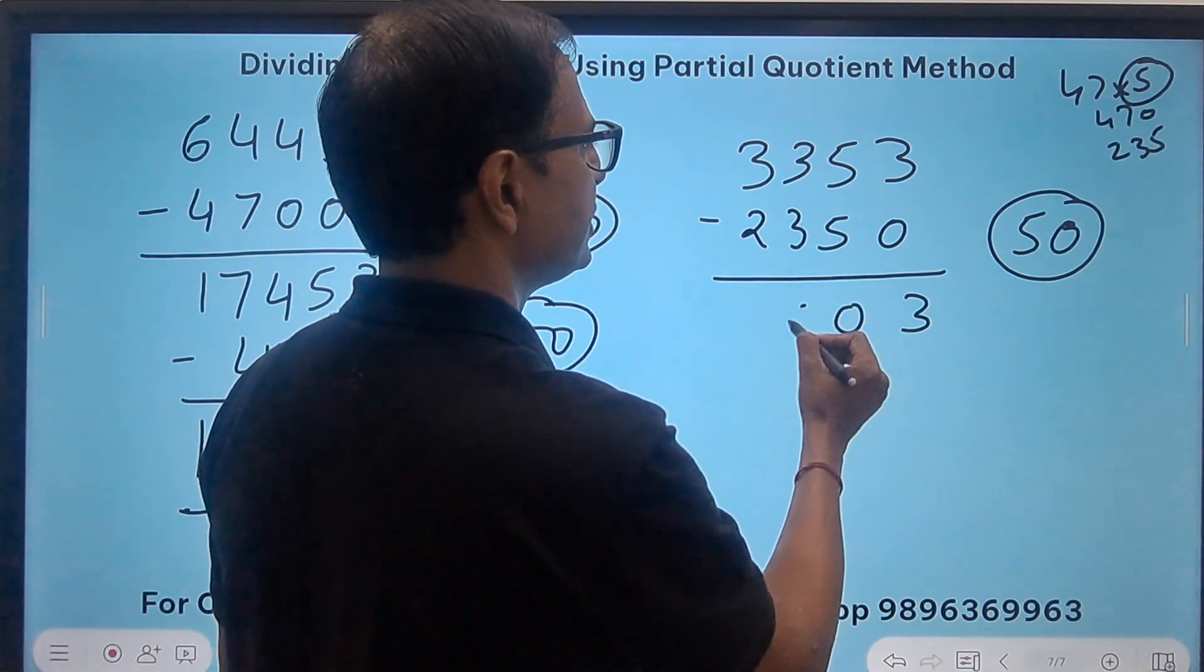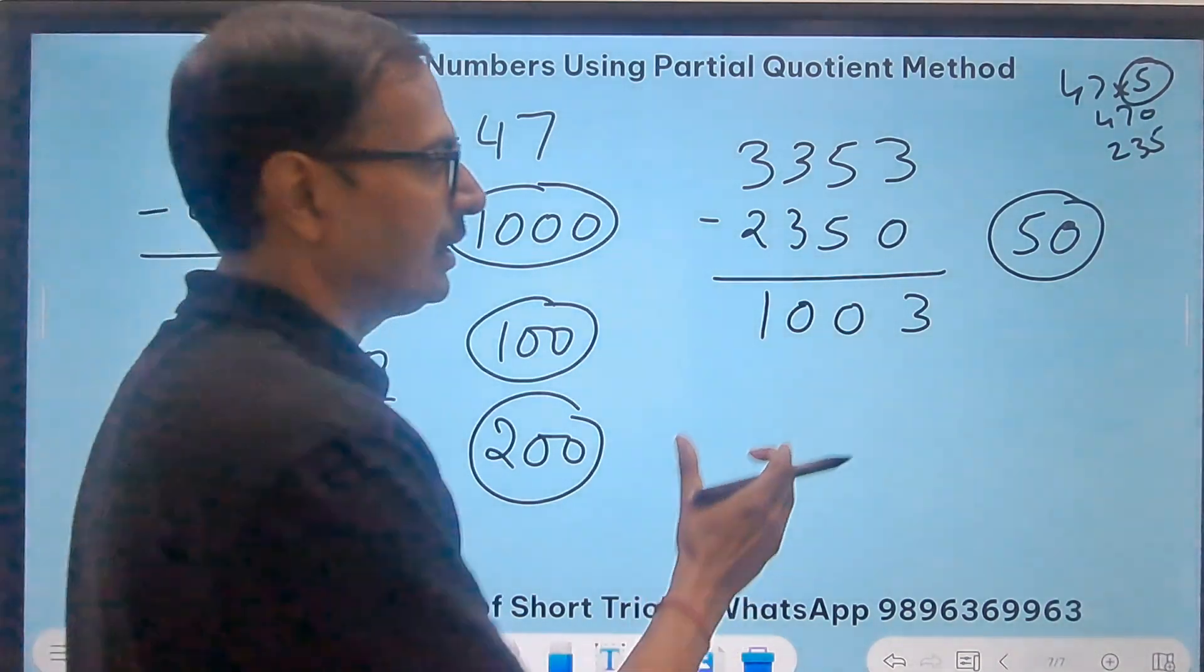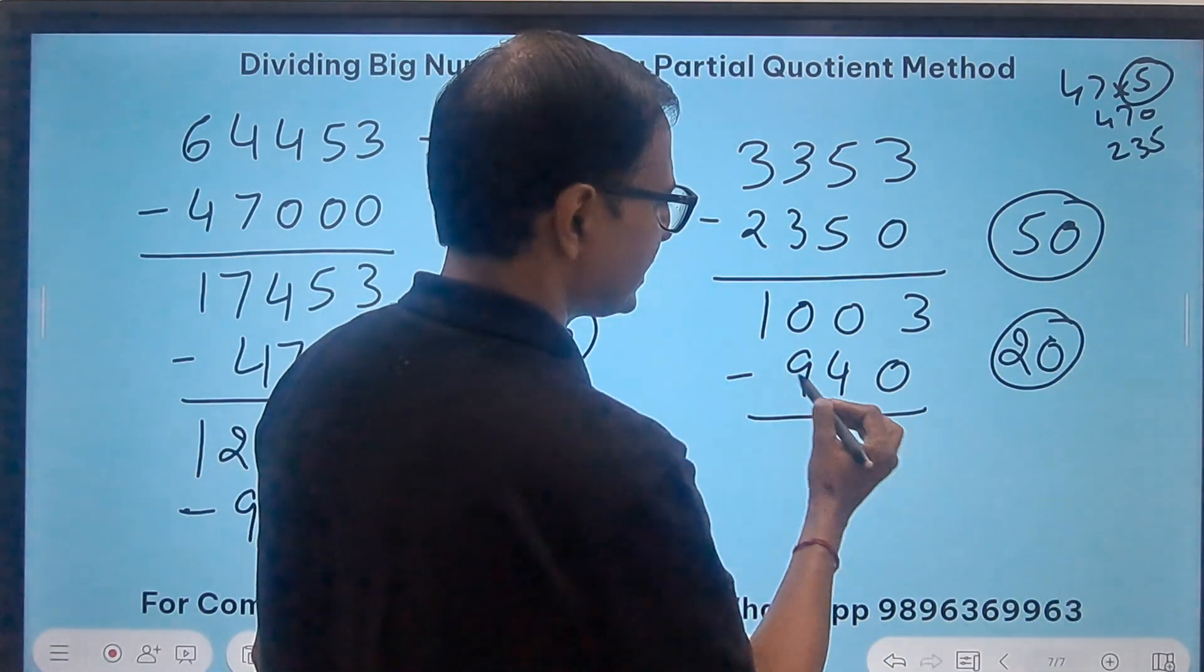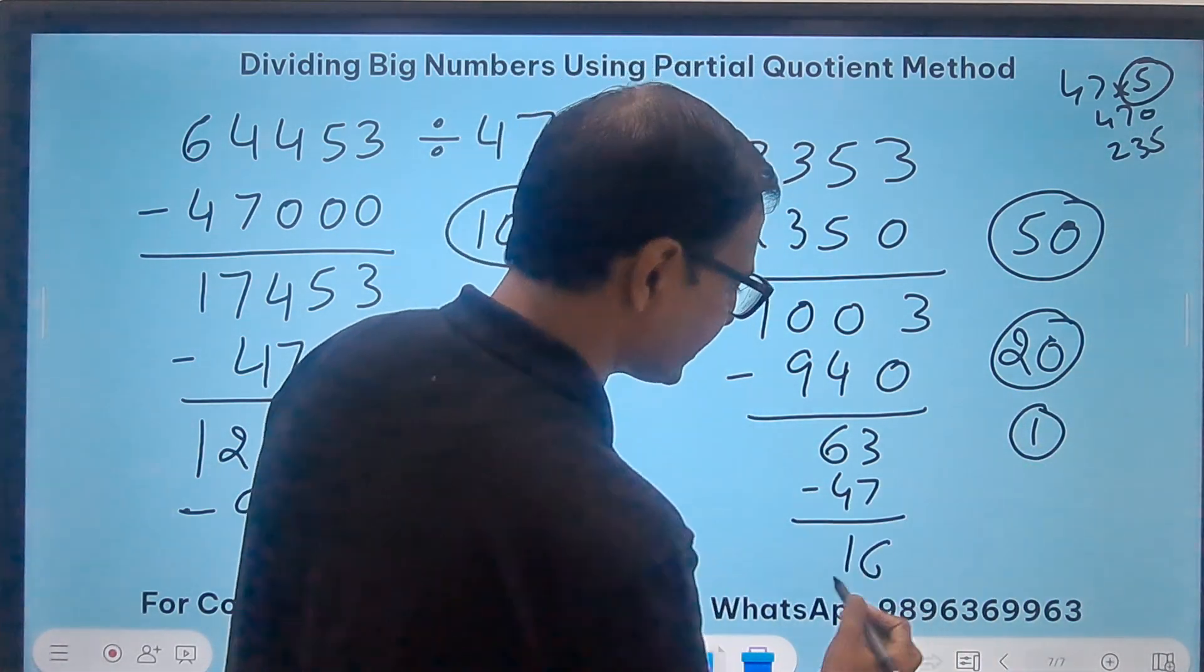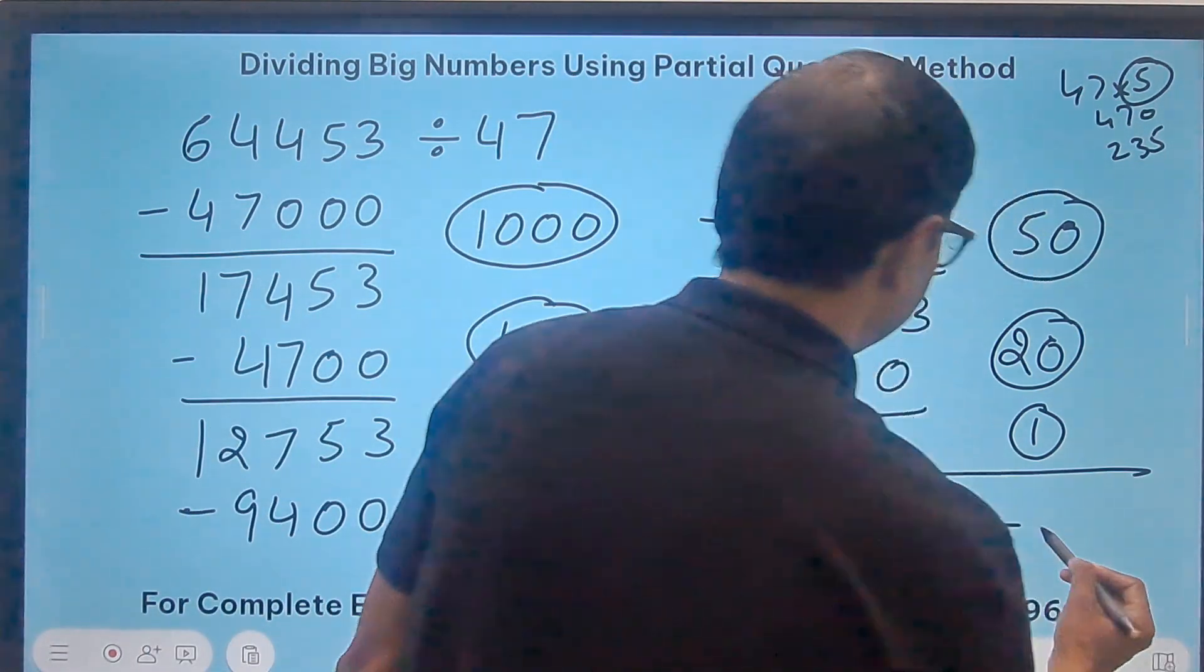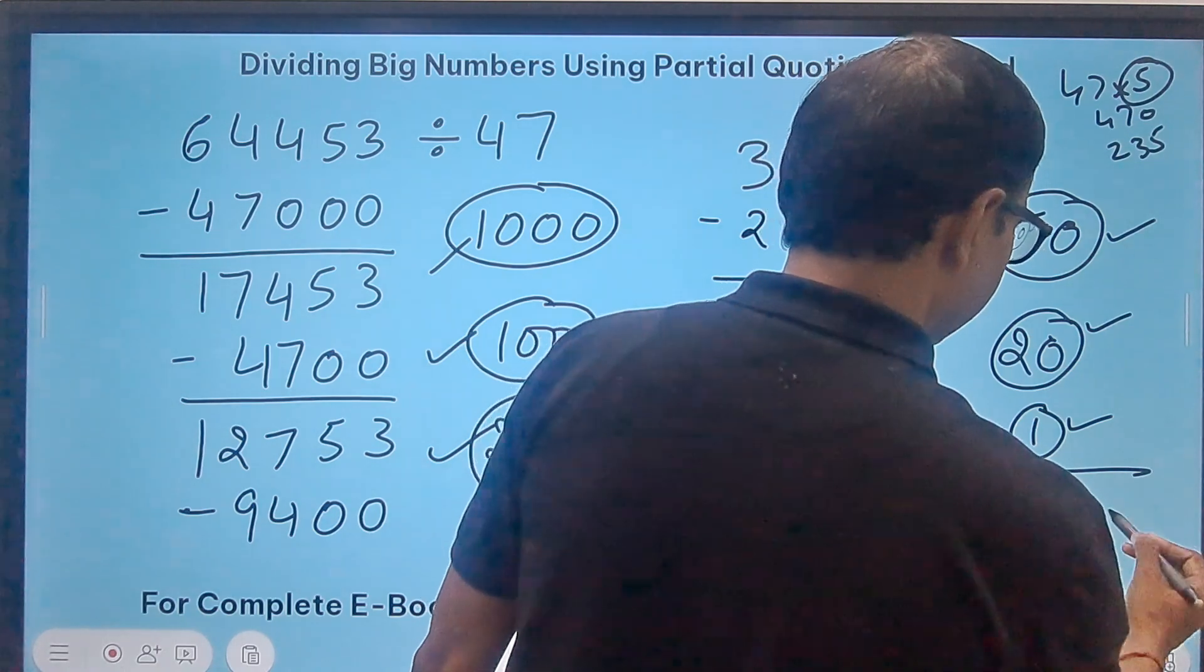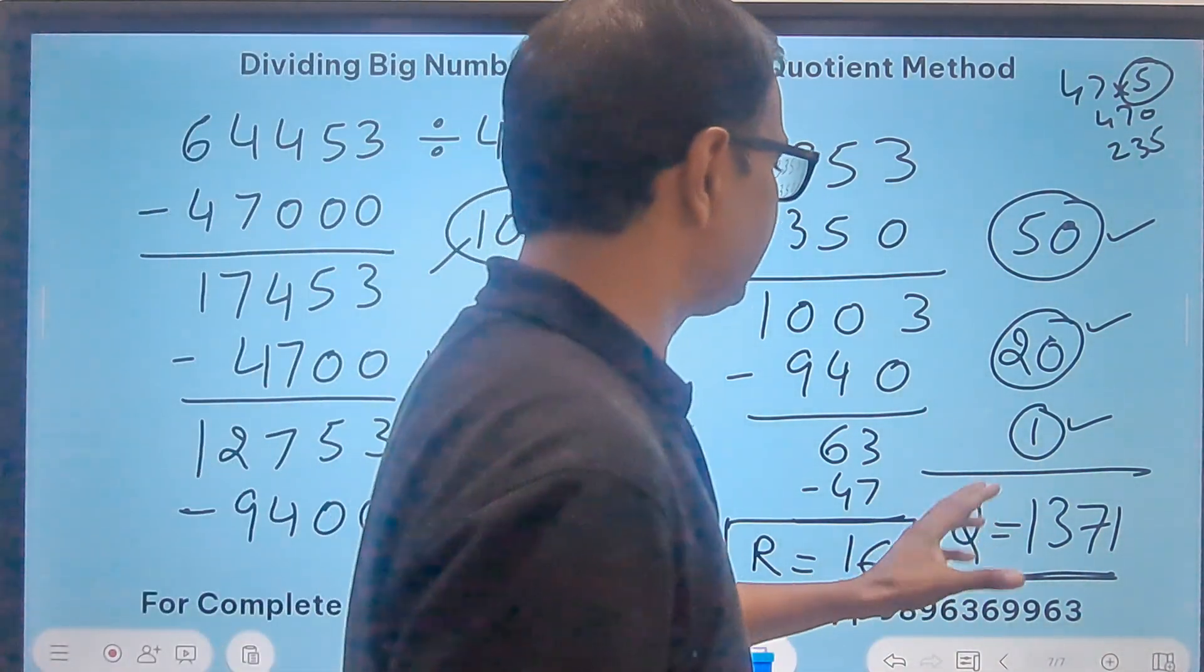Subtract and get 1003. 47 times 2 is 94, so 20 gives 940. That gives me 63. 47 times 1 is 47, giving me 16 as the remainder. This is the final remainder. The quotient will be 1000, 1100, 1300, 1350, 1370, 1371. So 1371 is the quotient and the remainder is 16.